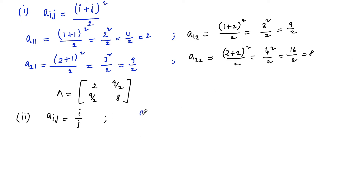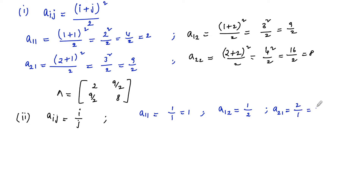We can write the first element a11 equals 1 upon 1, which is 1. a12 equals 1 upon 2. a21 equals 2 upon 1, which is 2. And a22 equals 2 upon 2, which is equal to 1.